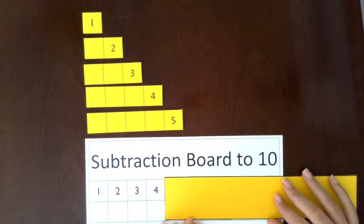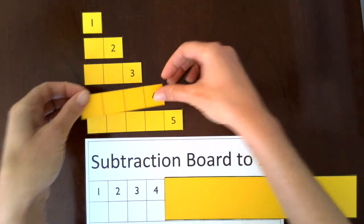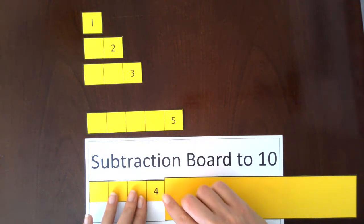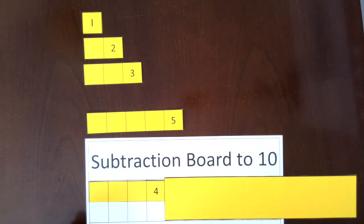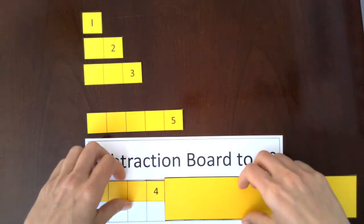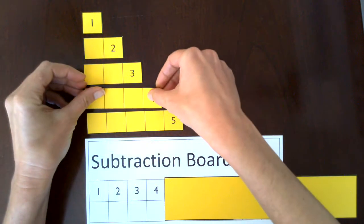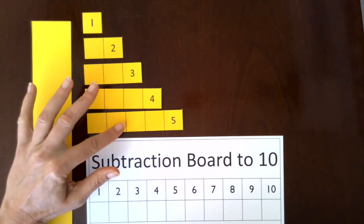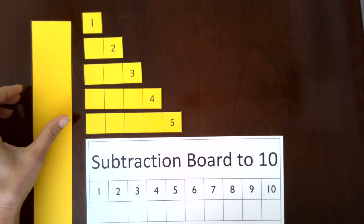And we're taking away 4. We're left with nothing—4 minus 4 equals 0. Let's do one more: 6 minus 3.